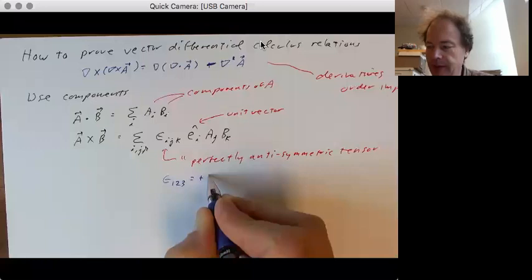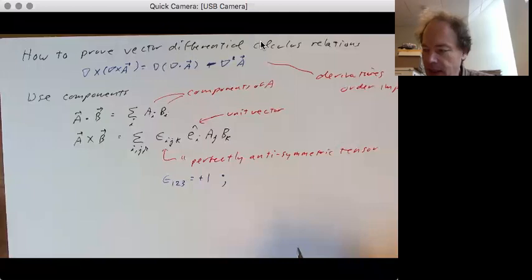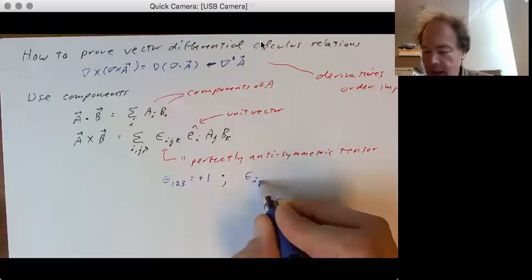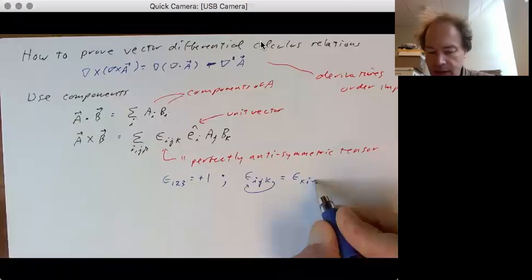Now, what we mean by a symmetry is if we take epsilon i, j, k, and we kind of rotate it around, if we take epsilon like this, that's equal to epsilon k, i, j, is equal to epsilon j, k, i.